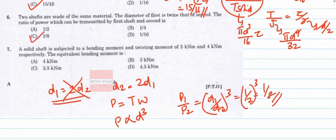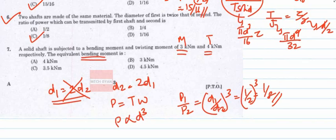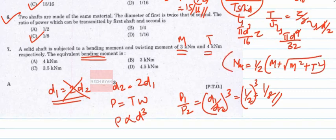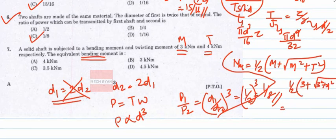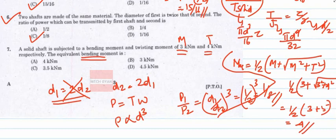Question 7: A solid shaft is subjected to bending moment M = 3 and twisting moment T = 4. The equivalent bending moment M_eq = ½(M + √(M² + T²)) = ½(3 + √(9 + 16)) = ½(3 + 5) = ½ × 8 = 4. The answer is option A.